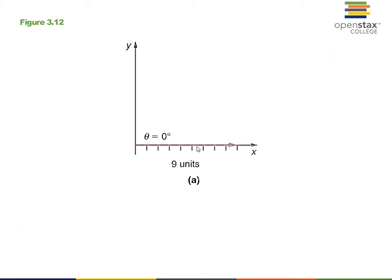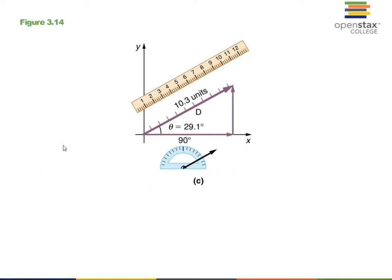So here's nine units in the x direction, a plus nine. Here's our second vector being drawn at the head of the first vector. And we have our resultant vector. So that's the head-to-tail method of adding vectors.